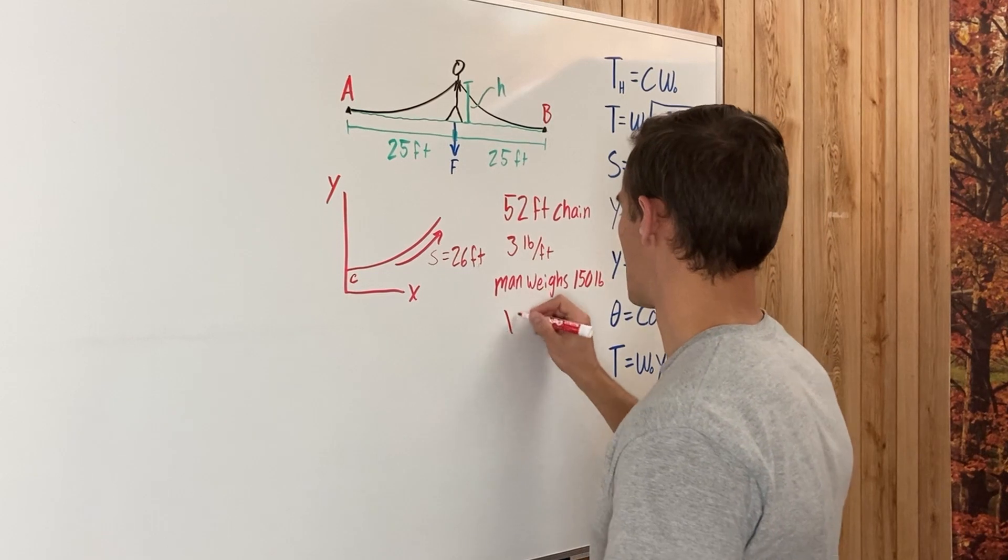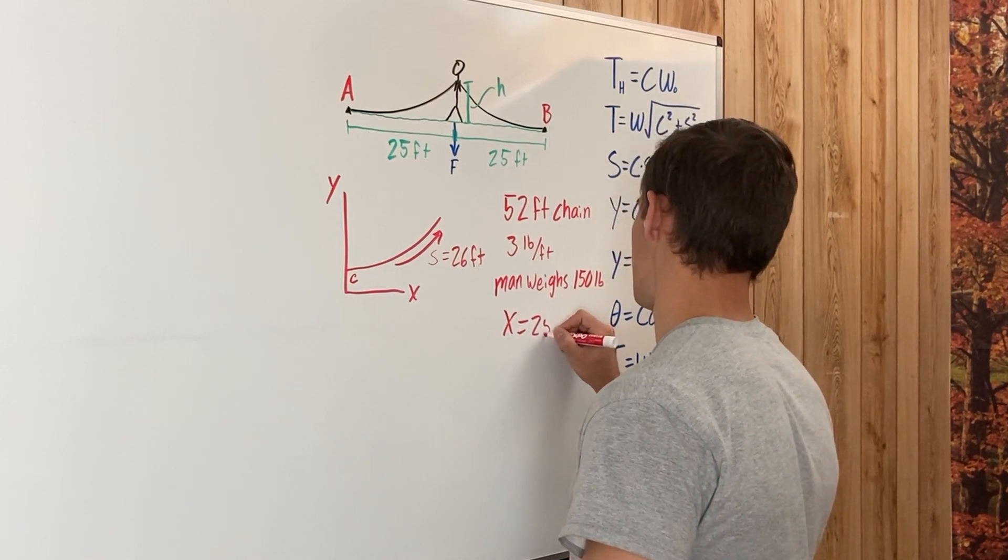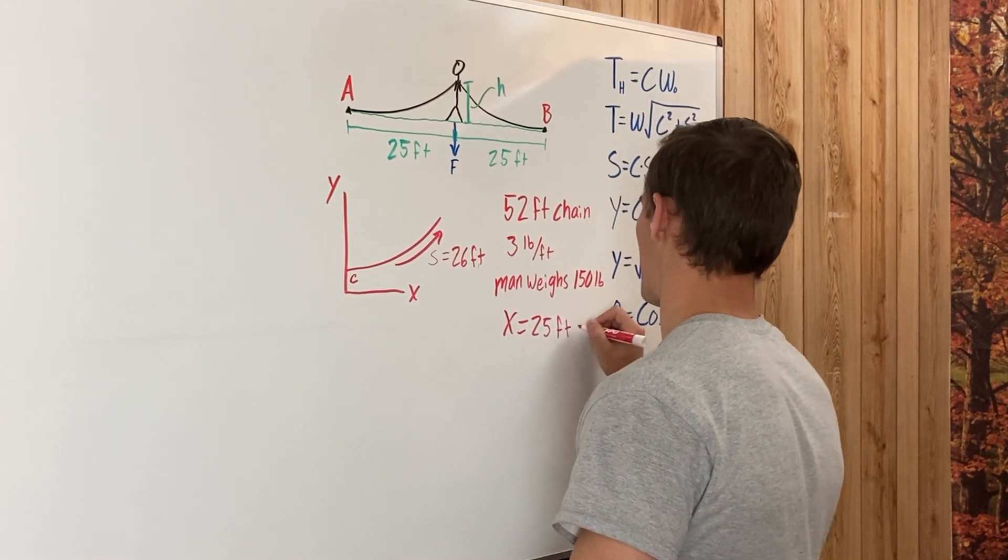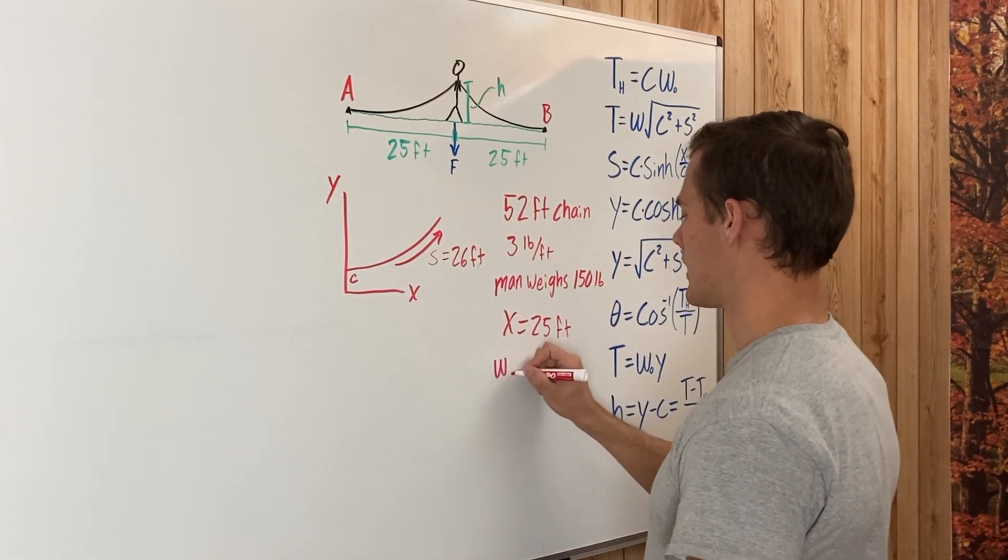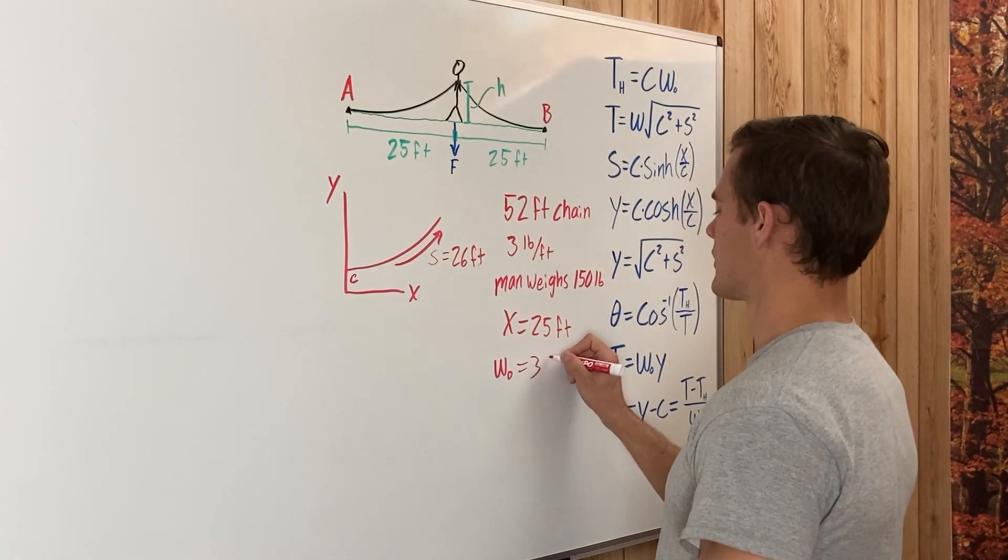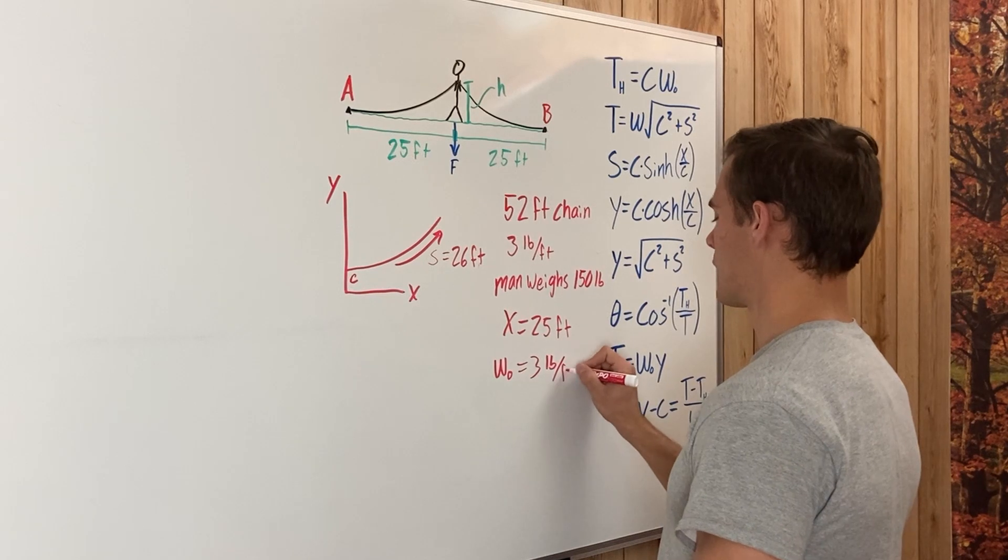Then we have that x is 25 feet, so x equals 25 feet. And then our weight per unit length of the chain, which is W naught, equals 3 pounds per foot.